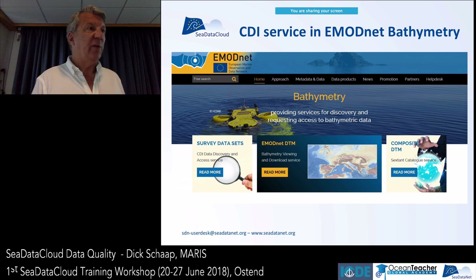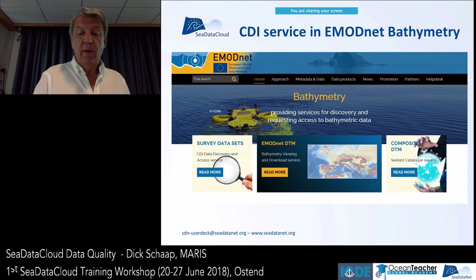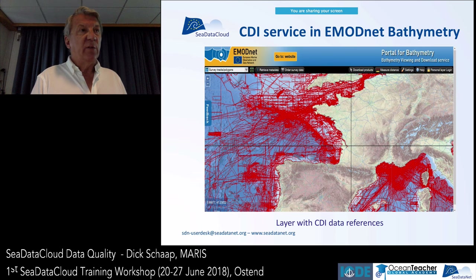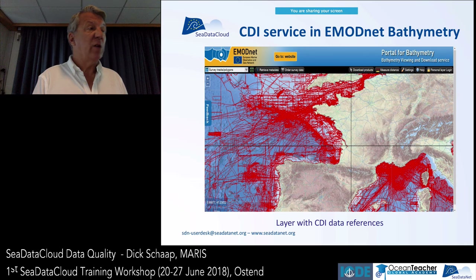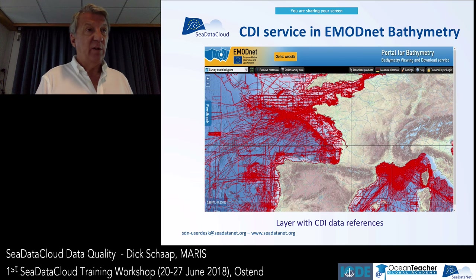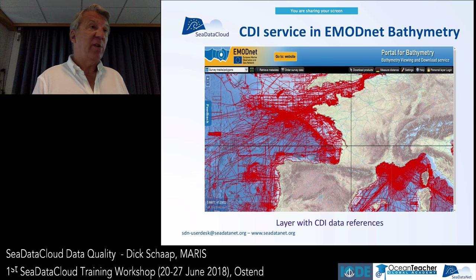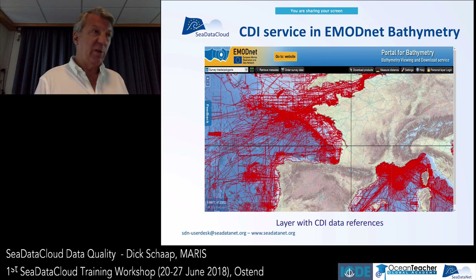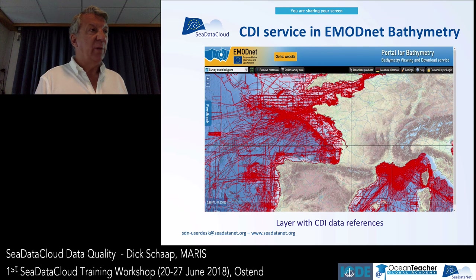The CDI catalog allows us to do tracking and tracing — every grid cell is related to a certain dataset, and datasets are fully described in the CDI system. Right now we have 27,000 bathymetry surveys in Europe in the system and more are coming. They are being used to make the DTM digital terrain model for Europe, served in tiles, as a WMS, and as a WCS server. Almost all research institutes and the dredging and offshore industries are using this DTM as a base layer.